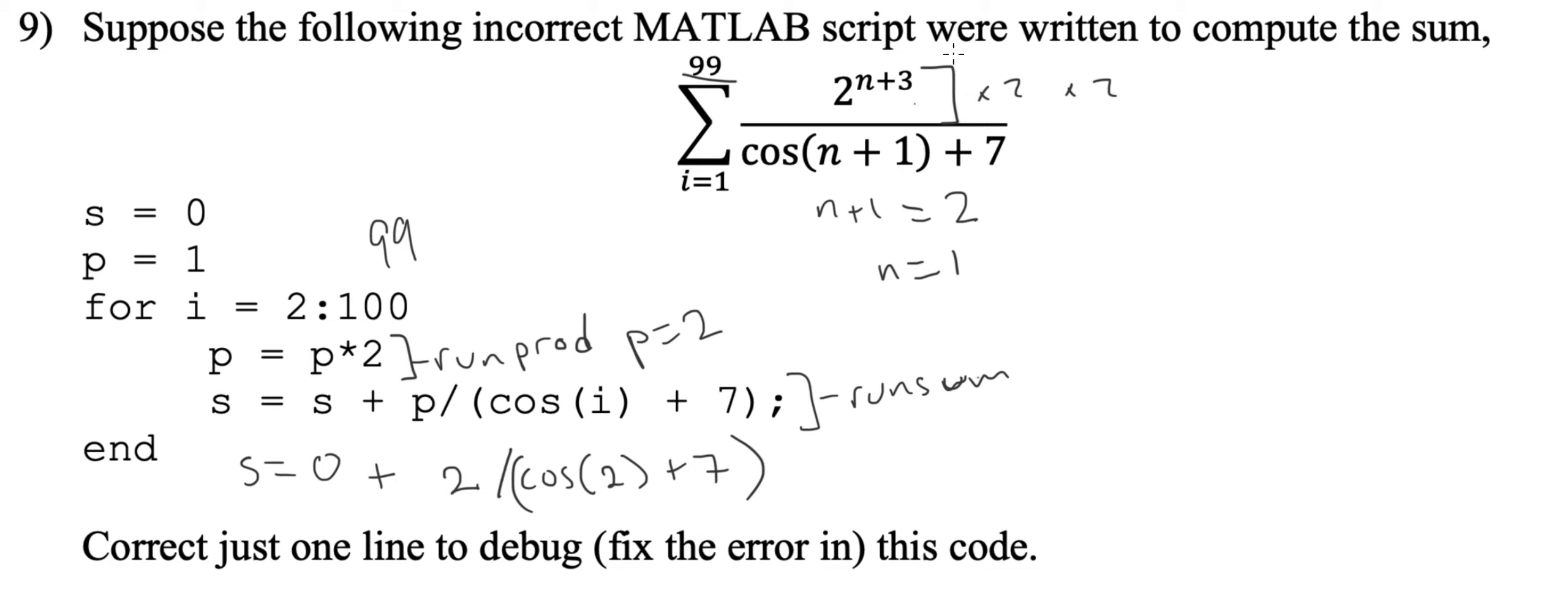If n equals 1, then let's look at the running product. Let's see if this one's correct. We have 2 to the n plus 3, which is 2 to the 1 plus 3, is equal to right here 2, right? Well...